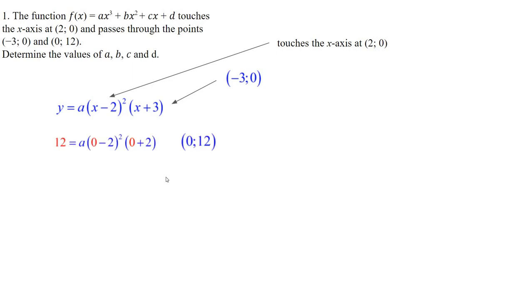Yeah, minus 3 and 0 makes that x plus 3. So instead of x, we put in 0. Instead of y, we put in 12. And then we work it out. Well, that's 2 squared is 4. Minus 2 squared is 4. Times 2 is 8. 12 divided by 8. a is equal to 3 halves.